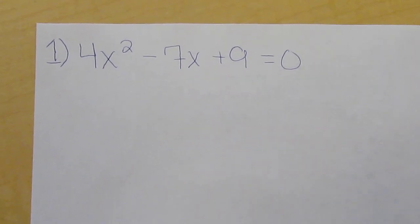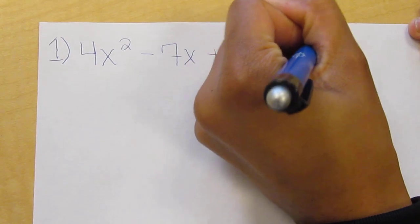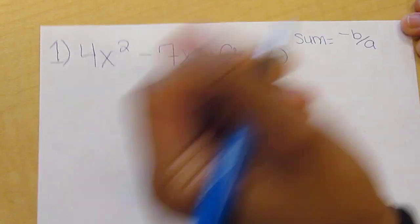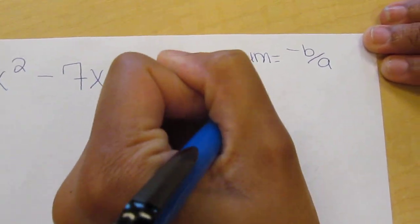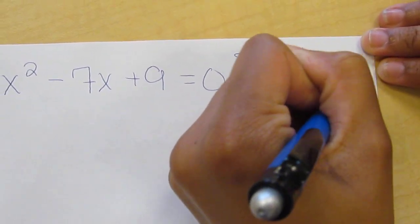My topic is giving the sum and product of the roots. The sum's formula equals negative B over A. The product's formula equals C over A.